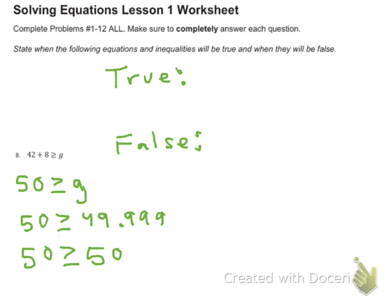Notice it's got that equal sign. So both of these are true so far. But 50 is not greater than or equal to 50.001. So that would be false.